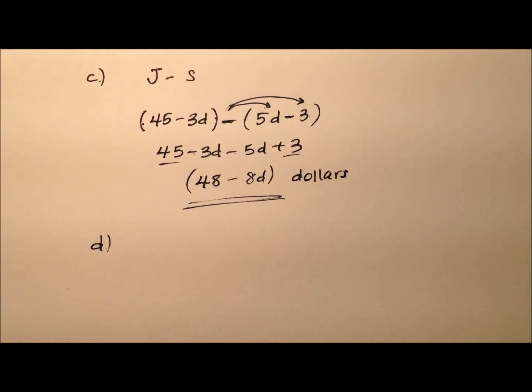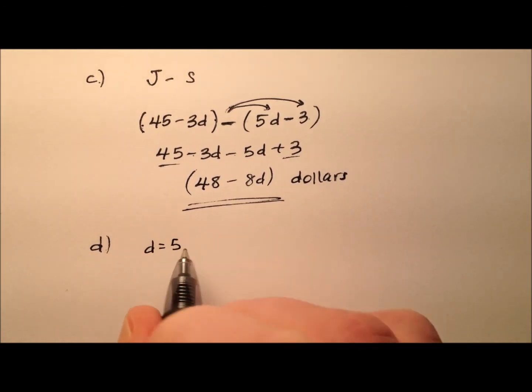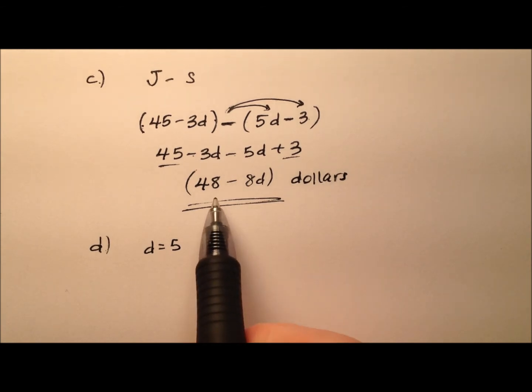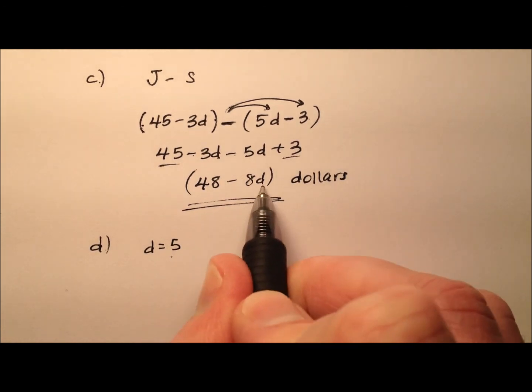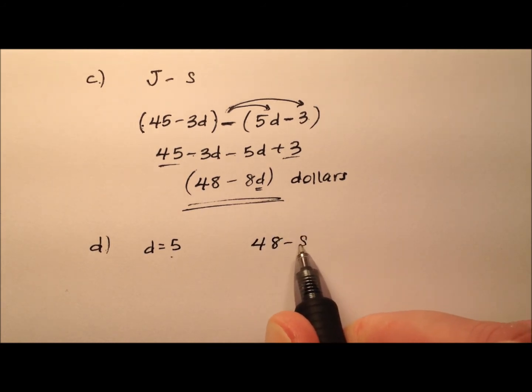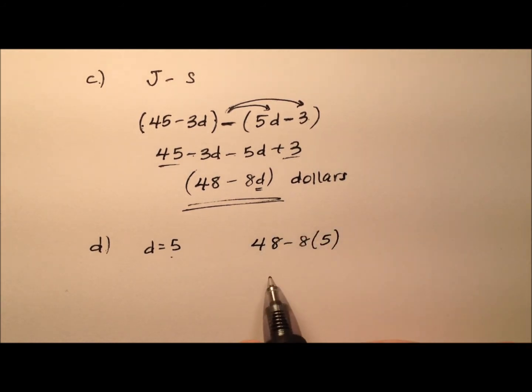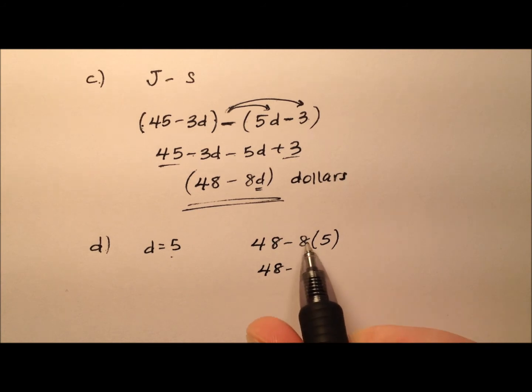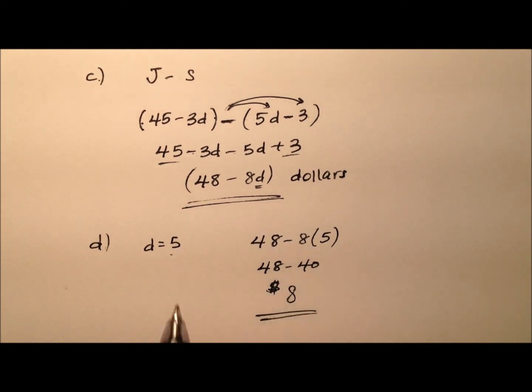Part D says, what if d equals 5, then how much more money does Joe have than Sue? We can plug that 5 in for d, so we'll have 48 minus 8 times 5, which is 48 minus 40, so 8 dollars. Joe has 8 more dollars than Sue when d equals 5.